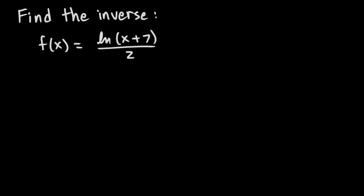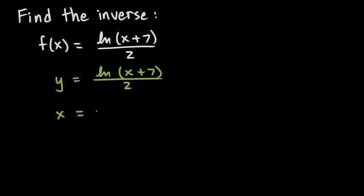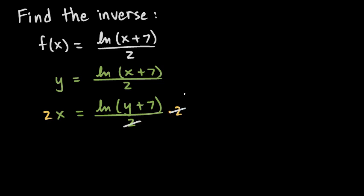Here's another example. f of x is equal to the natural log of x plus 7 over 2, and we're told to find the inverse. Same technique: rewrite with y equals notation, so y equals the natural log of x plus 7 over 2. Then switch the x and the y, giving us x equals the natural log of y plus 7 over 2. Then we multiply both sides by 2, the 2s cancel, and that gives us 2x on the left and the natural log of y plus 7 on the right.